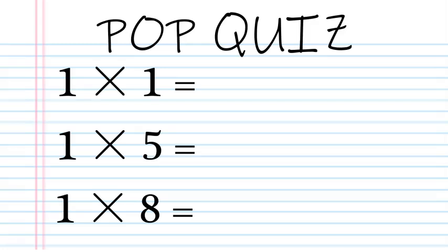Here's another pop quiz! One times one — that means I have one one, that equals one. One times five means I have one five, that equals five. Remember, anything times one equals that number. So one times eight must equal eight.